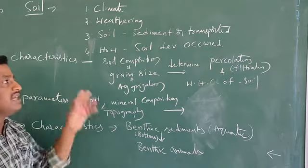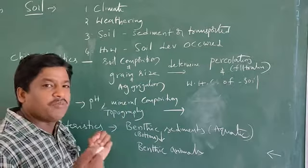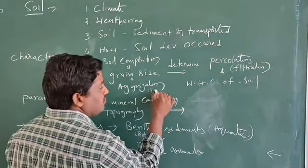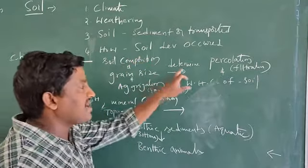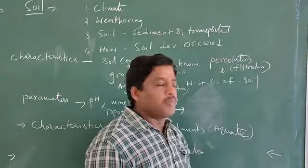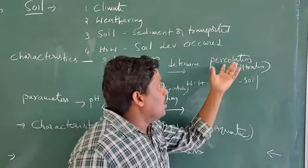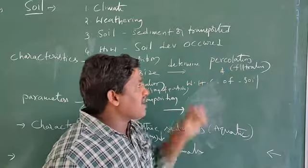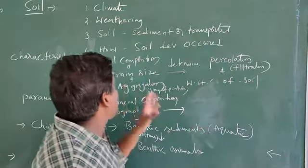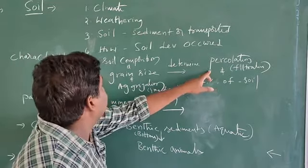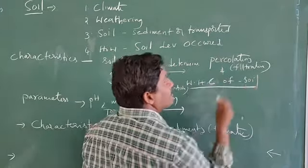The characteristics of soil include soil composition, grain size, and aggregation. Aggregation means a group of particles. All these characters together determine the percolation capability — percolation means filtration. The soil has different regions A, B, C, and so on; water particles are filtrated through these layers and finally reach underground. That is the groundwater we drink. These characters also determine the water holding capacity of the soil.